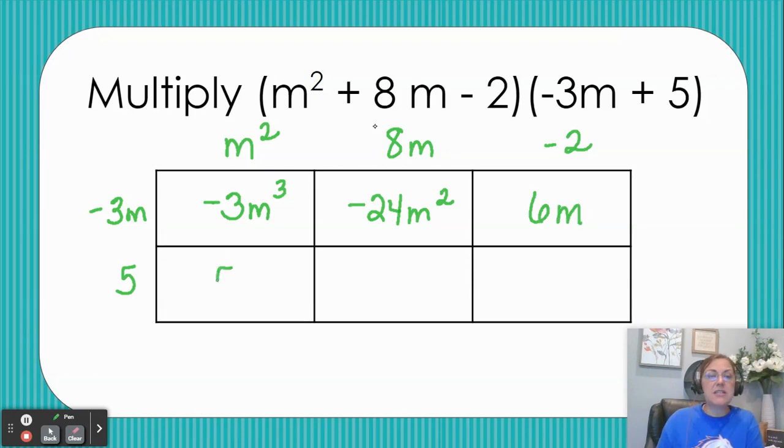5 times m to the second gives me 5m to the second. 5 times 8m gives me 40m. And 5 times negative 2 gives me negative 10.